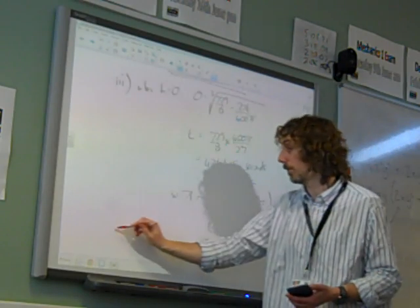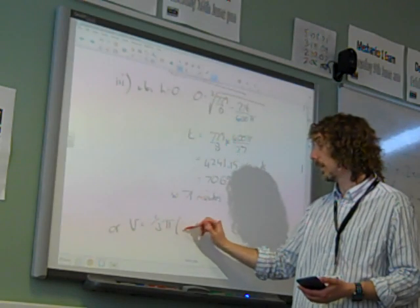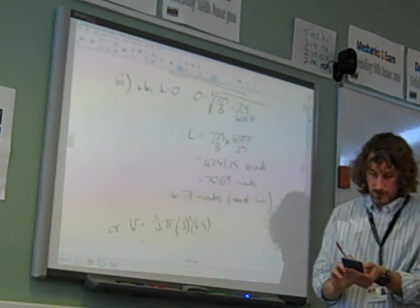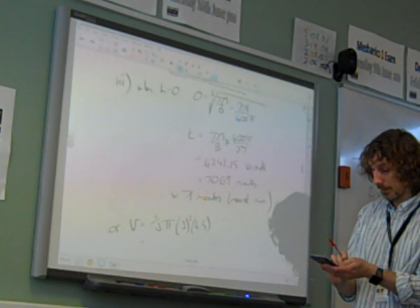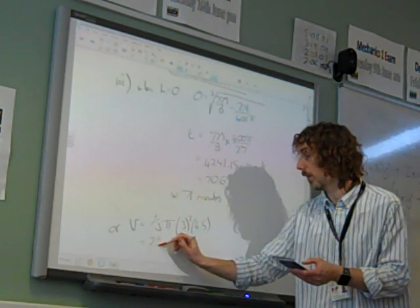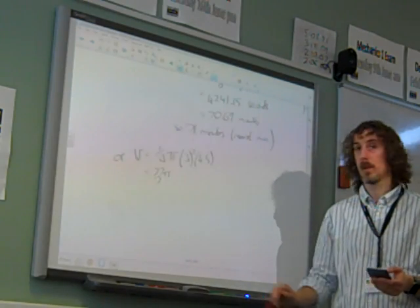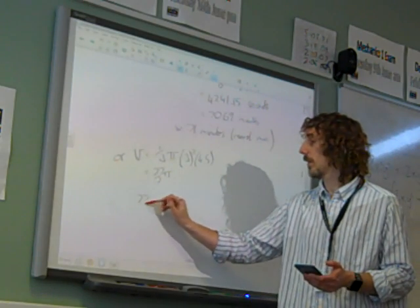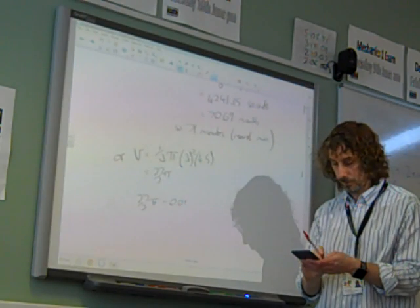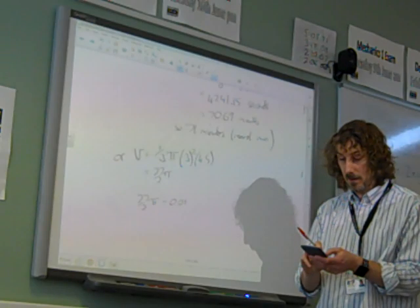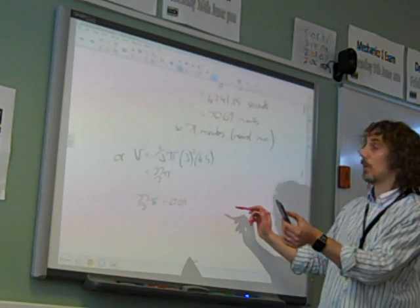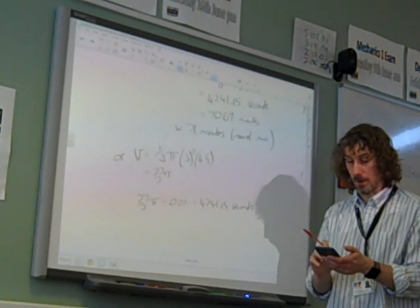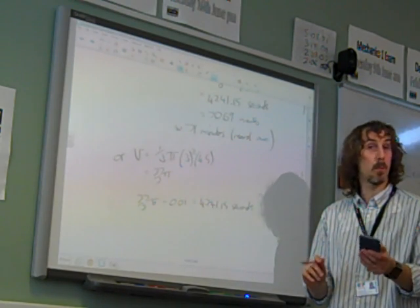you could have said this cone, where it's 3 and 4.5, so the volume is 1 third pi r squared h, so the volume is 1 third times pi times 9 times 4.5 is 27 over 2 pi. How many 0.01s goes into that? 27 over 2 pi divided by 0.01 gives us an answer of 4241.15 seconds which we are going to divide by 60 and come out with our answer of 71 minutes.